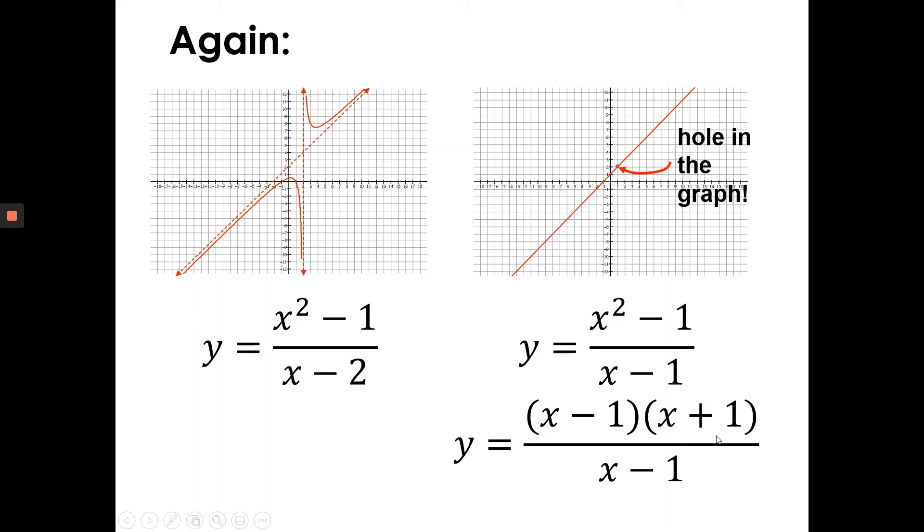Now, of course, not just x plus 1. There's still a restriction that remains. So it's y equals x plus 1 with a restriction where x cannot equal to 1, which means this graph makes perfect sense. This hole makes perfect sense.